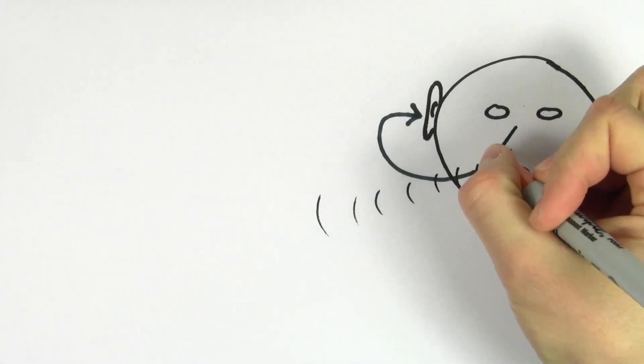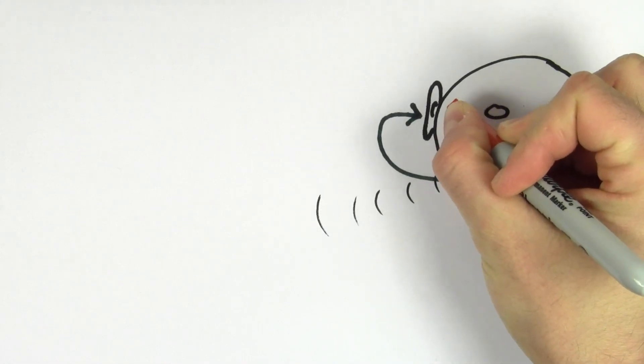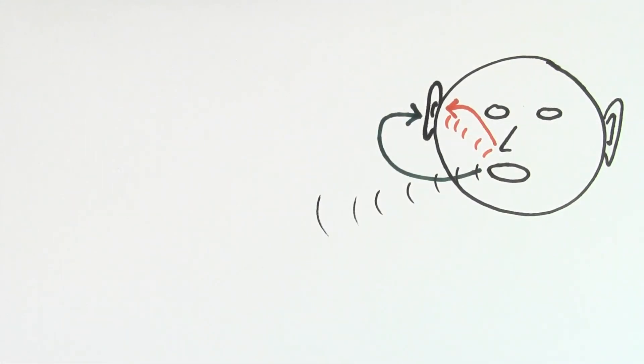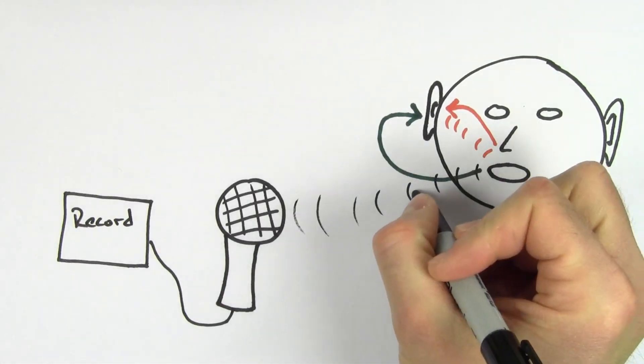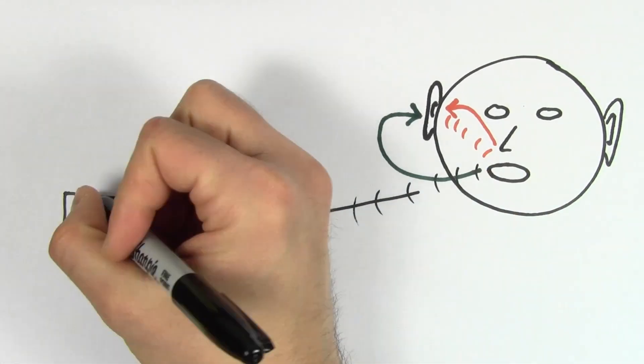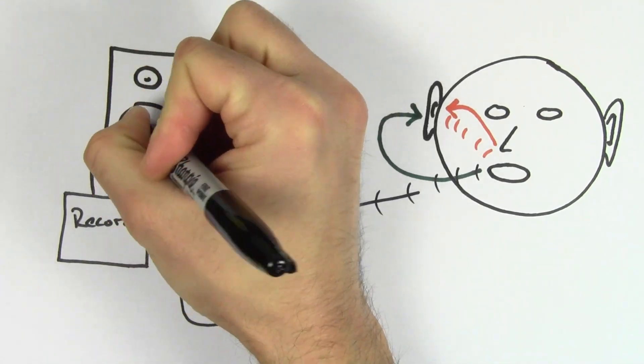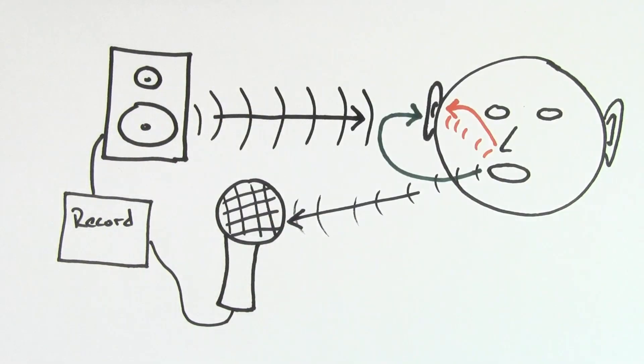But we also hear the vibration of the sound wave traveling through our flesh and bone, through our skull, and into our eardrum. But on an audio or video recording, the only part that's recorded is the sound that travels through the air. So when you hear your voice played back on an audio recording, you only hear what other people hear when they listen to you.